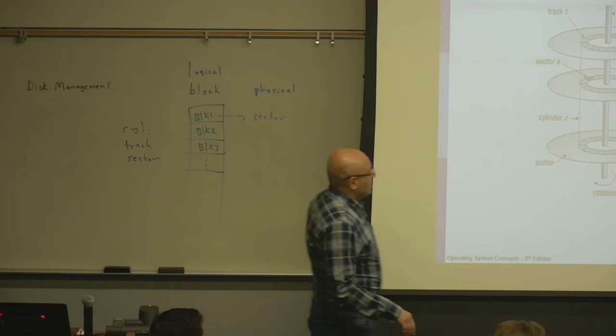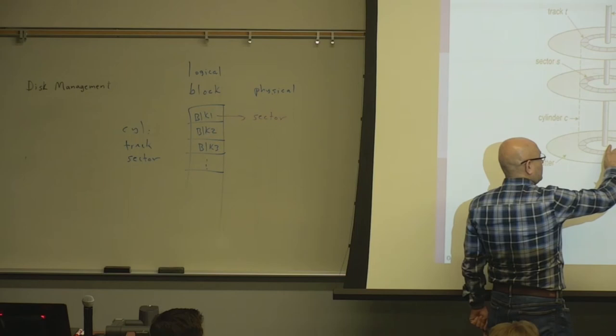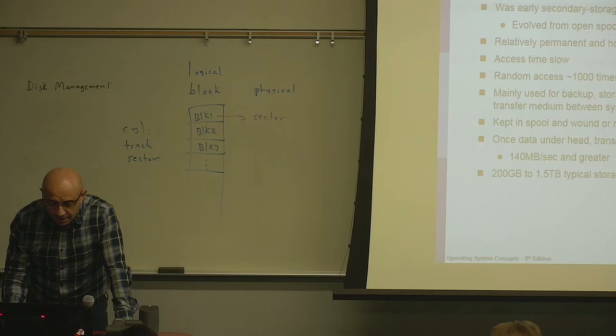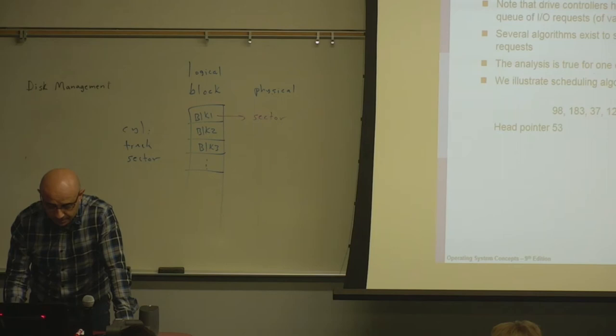The cylinder number determines the head motion. This is cylinder zero, and this is the last cylinder here. Going to the last cylinder will require more head motion. So if we have multiple requests to multiple cylinders, how should we schedule them to minimize the head motion?